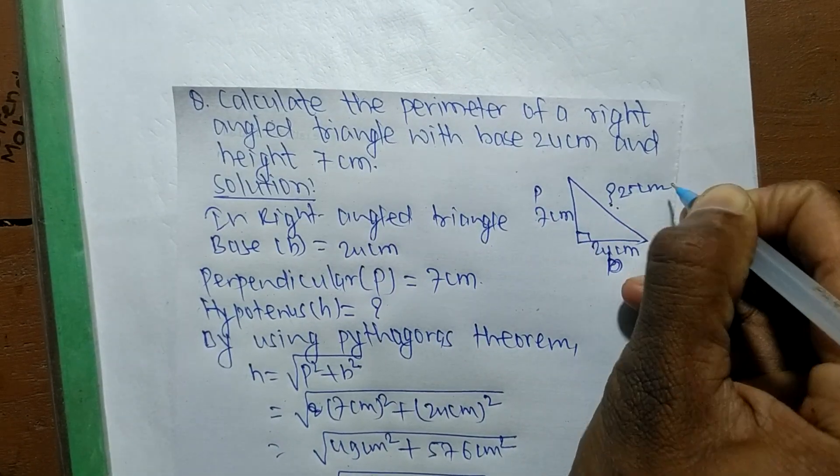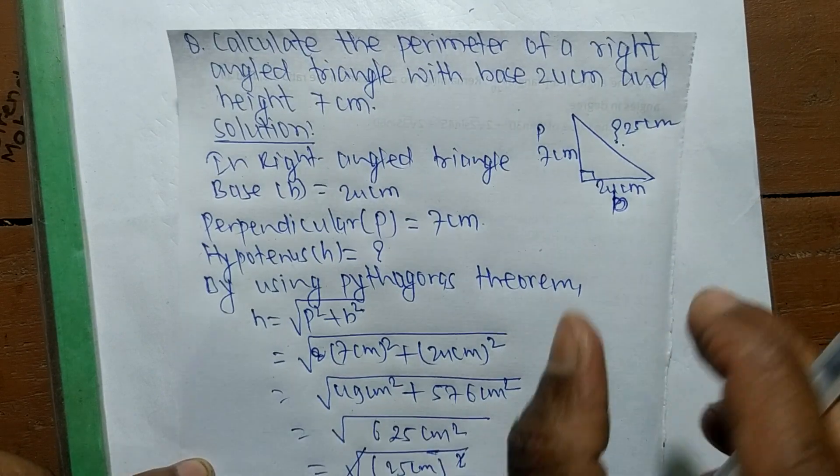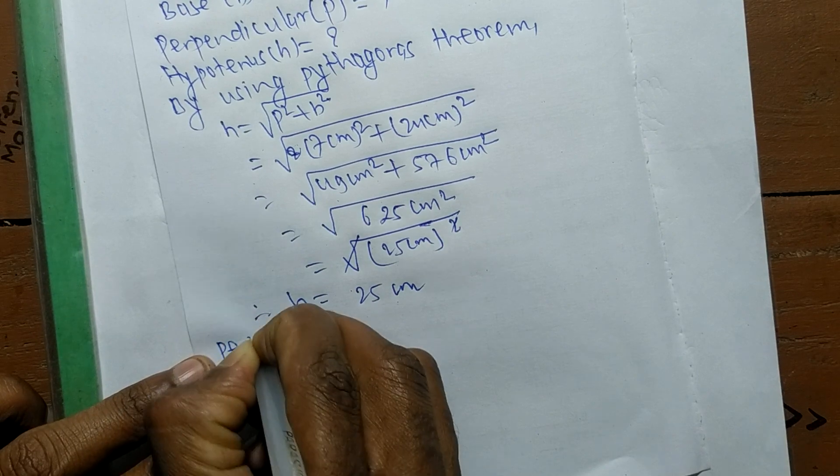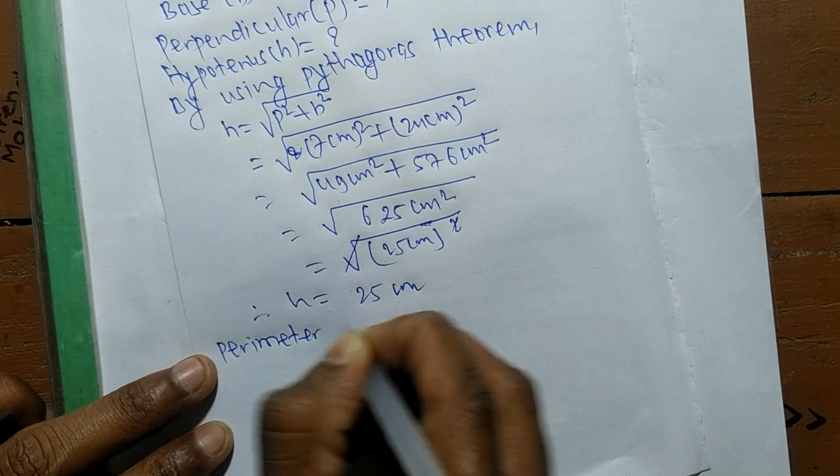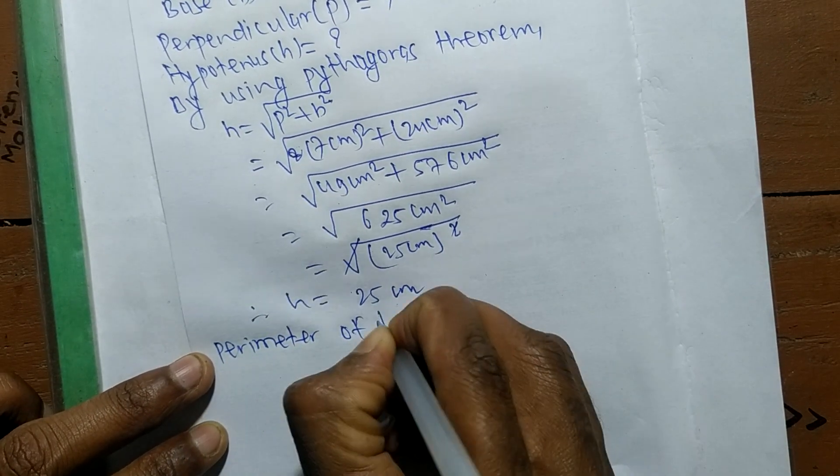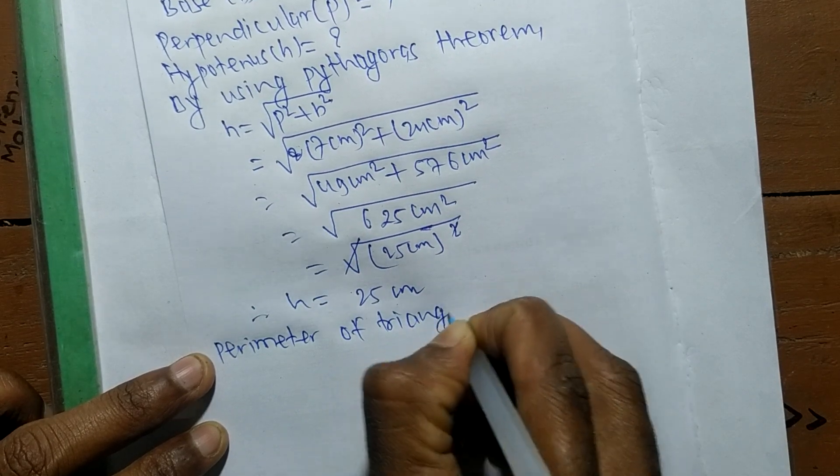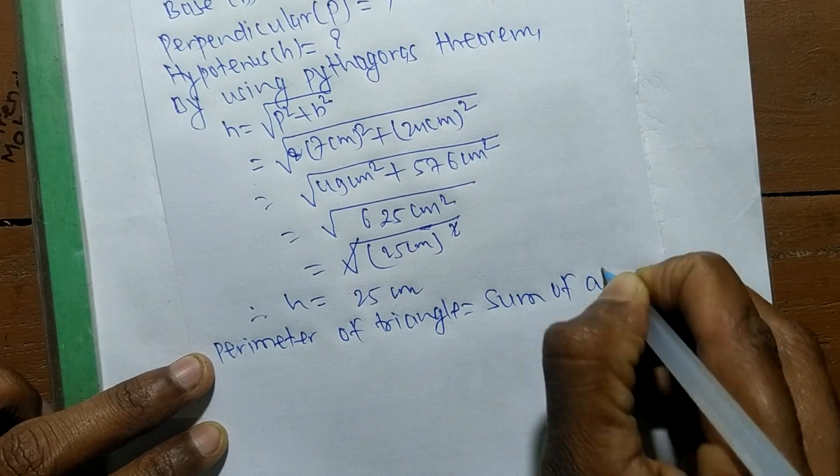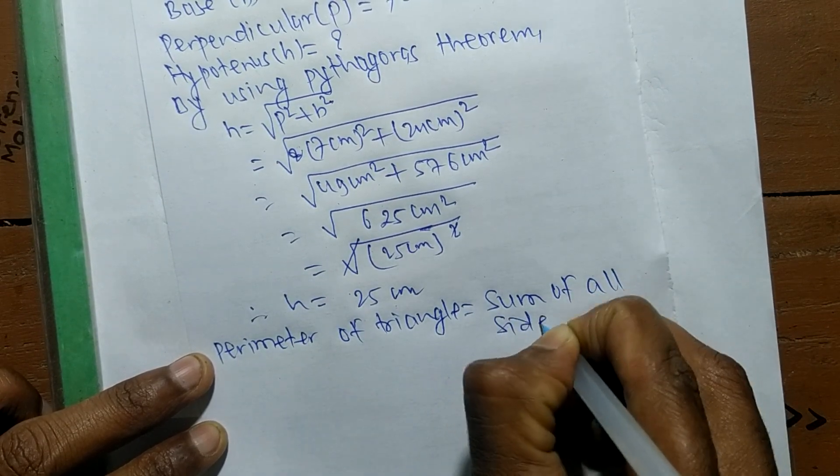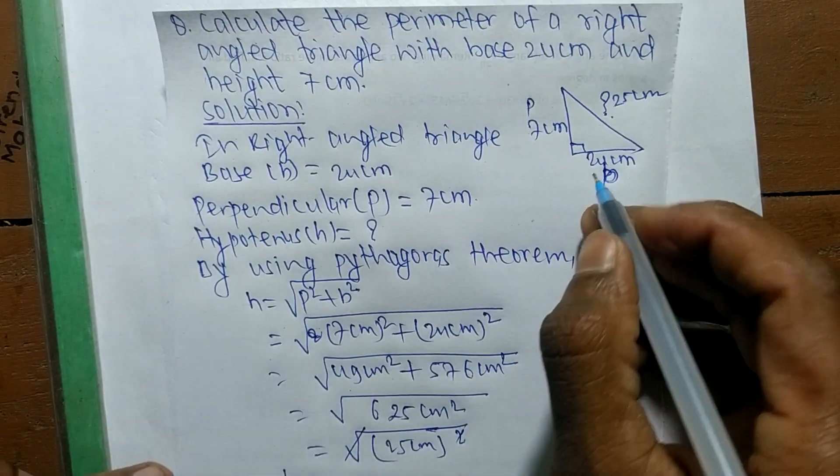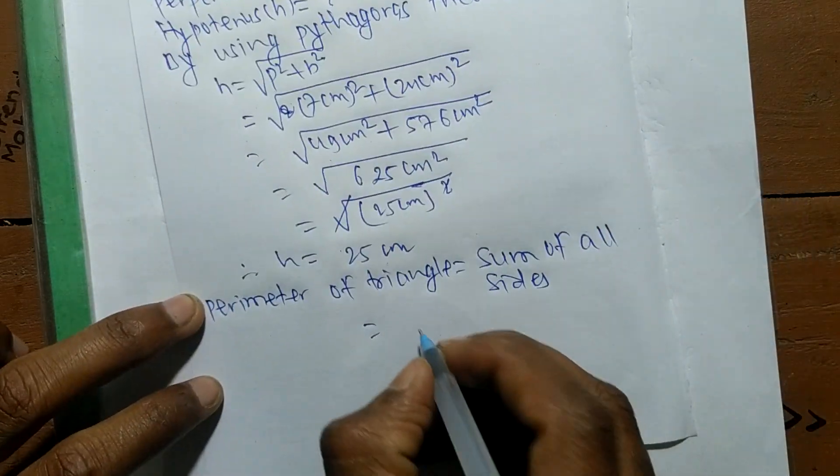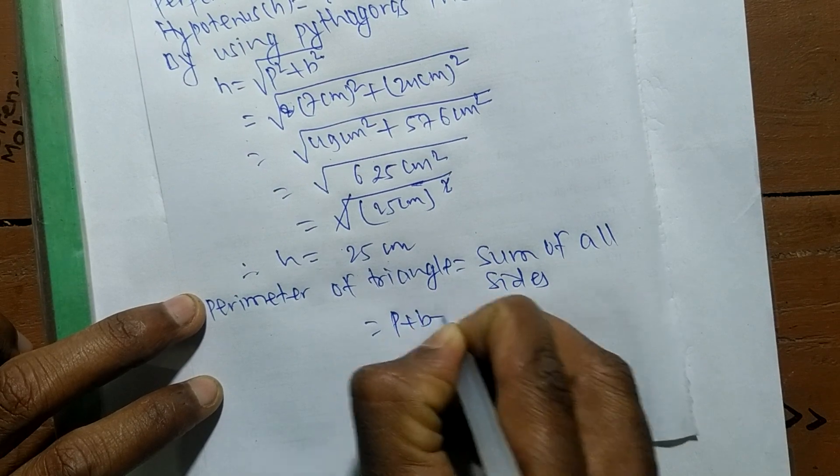The square cancels, and H equals 25 centimeters. The length of the hypotenuse we got is 25 centimeters. Now we have to determine its perimeter. The perimeter of a triangle is the sum of all sides.